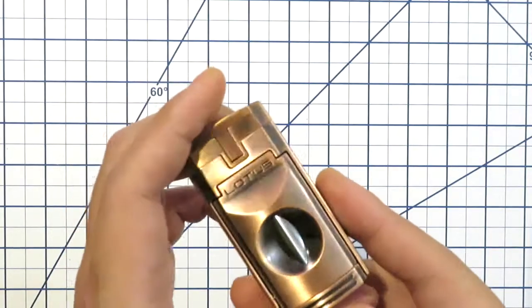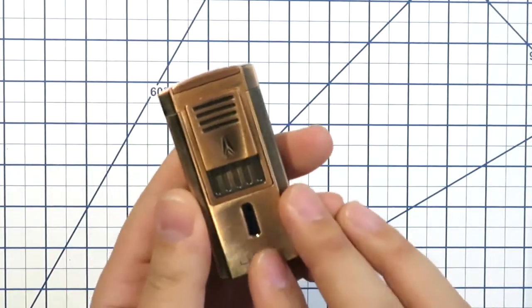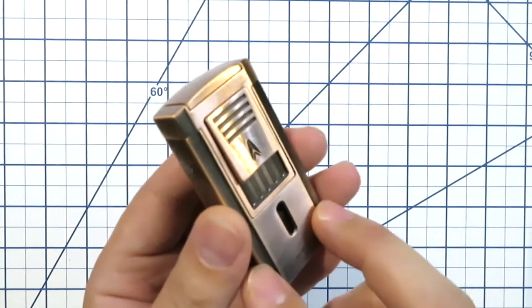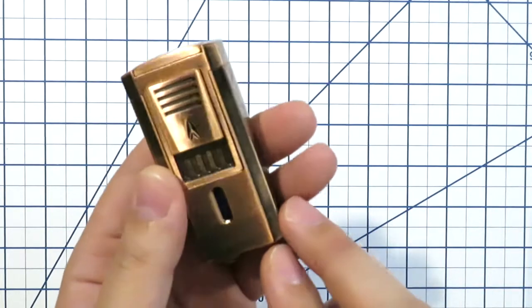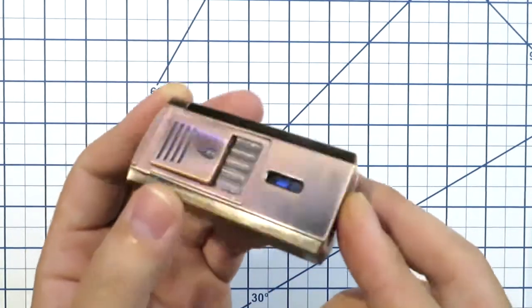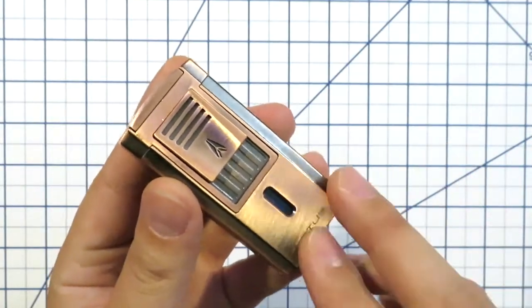This lighter is more designed for if you're going to a cigar bar after work with some friends, or you're traveling and you don't want to take a lot with you and you don't plan on smoking that many cigars while you're gone, meaning you're not bringing any type of butane with you.